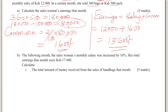Now let's go to part B. The following month, the saleswoman's monthly salary was increased by 10%. Her total earnings that month were $17,600. There are two things here: there was an increase of the salary by 10%, and the total earnings was $17,600. Remember that these total earnings represent the salary plus the commission.